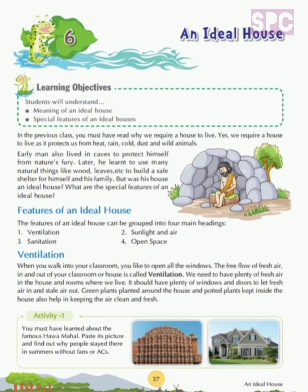Let's move on. The features of an ideal house can be grouped into four main headings: ventilation, sunlight and air, sanitation, and open space. Any house, big or small, must have these four features. These four features will make that house an ideal house. Now let's study about these features in detail.